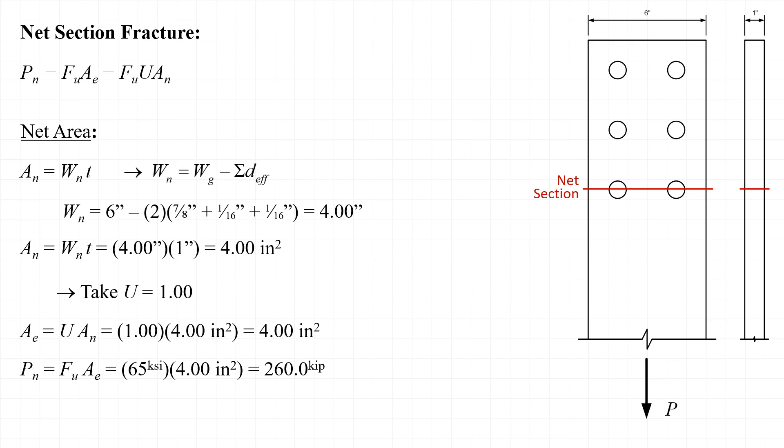Finally, we can substitute in to determine our nominal strength P sub n, and we find that that's equal to 260 kips. And then we can apply the resistance factor of 0.75 for a net section fracture and find that the design strength phi times P sub n is equal to 195 kips.